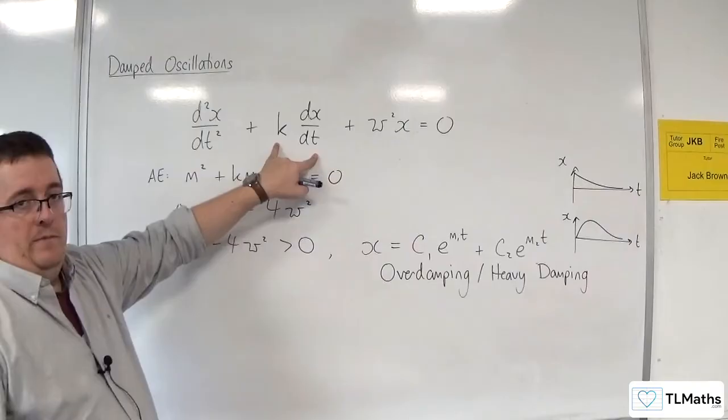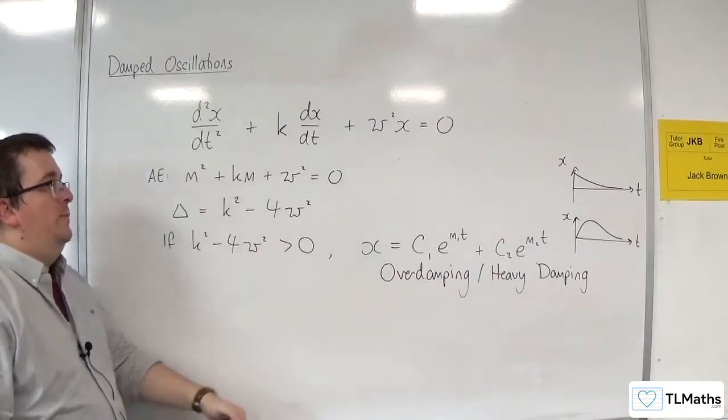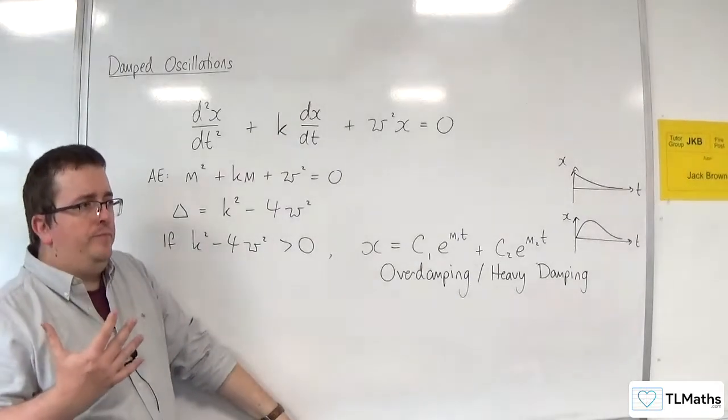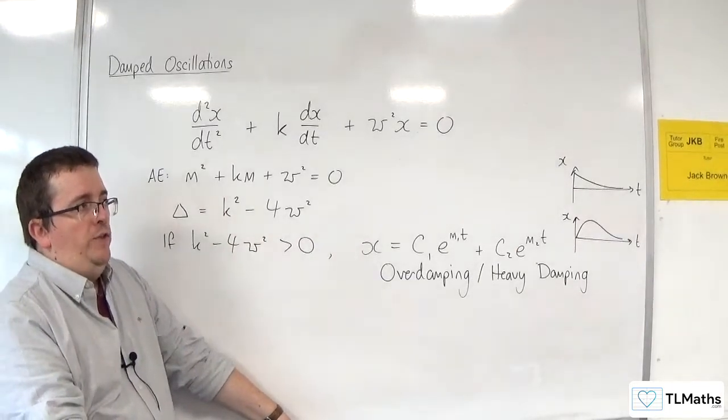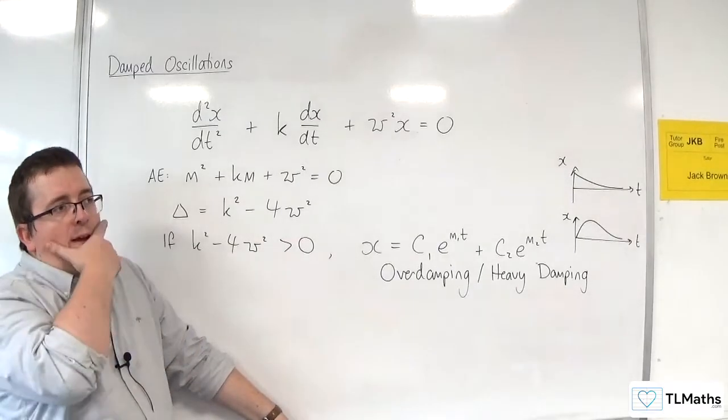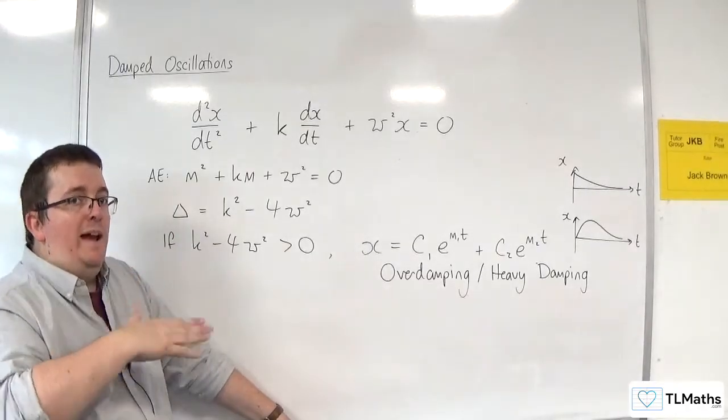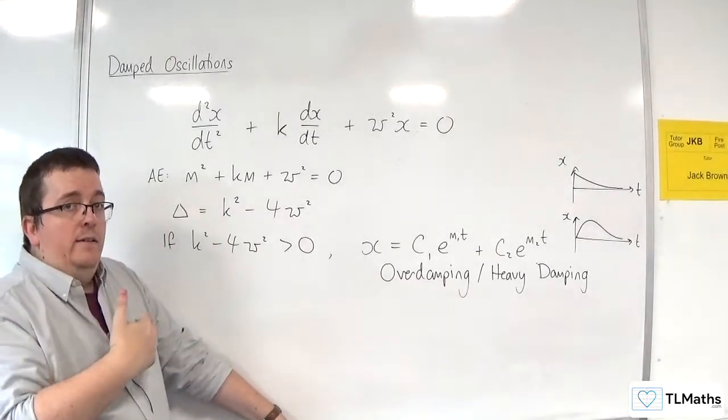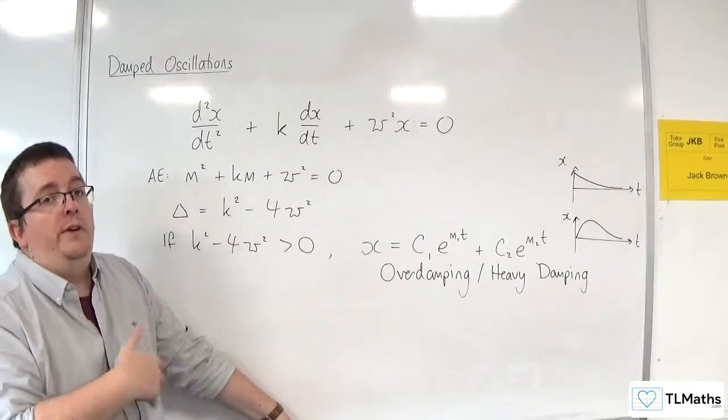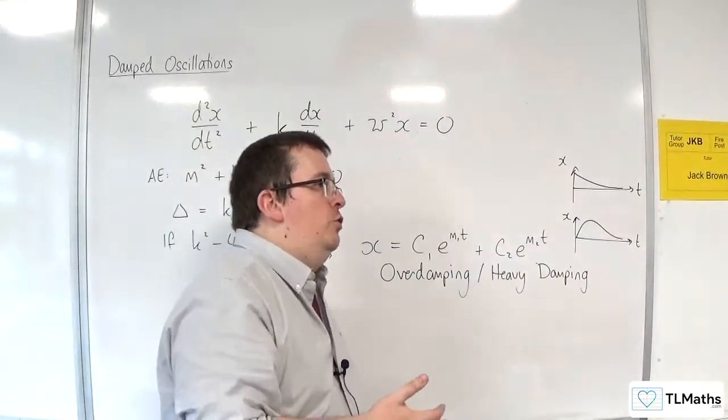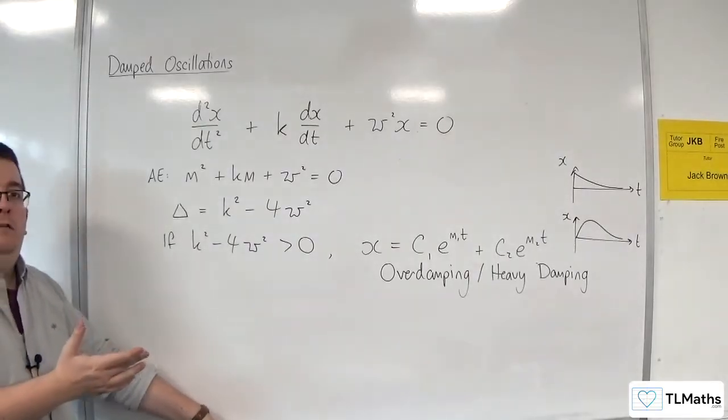What this term does is it adds in a resistance to that. So imagine that if you change the conditions of the room so that you made what it was going through, the fluid that the actual pendulum was going through. So if it's air, you're going to get air resistance, for example. Or it could be going through water, or you could have it going through a more viscous fluid, like treacle.